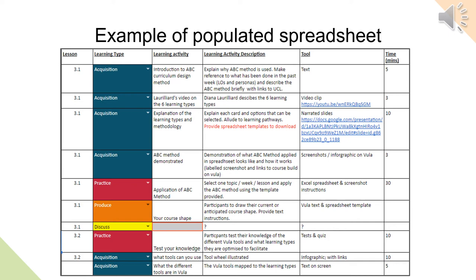In the column called 'tool', the relevant tool is listed. For text-based content, a good idea is to describe whether the text is in the form of a Word document, PDF, blog, and so forth. You can also add a link to that particular resource. In the column titled 'time', time durations are included to get an overview of how much time each item may take, so that we know if we are giving students too much content or too many engagement activities.